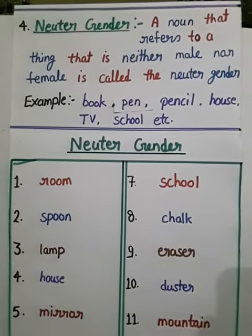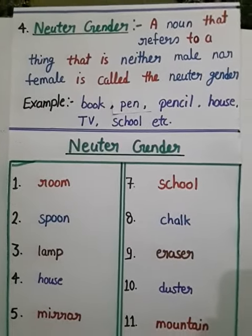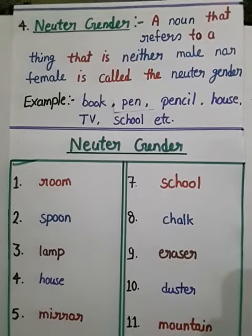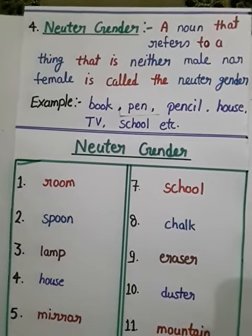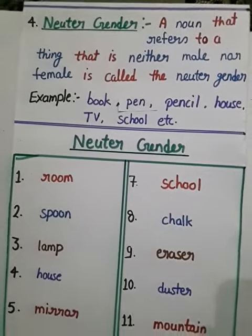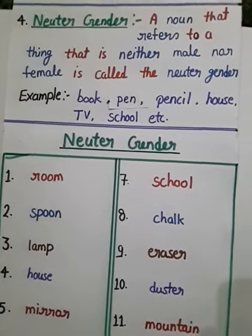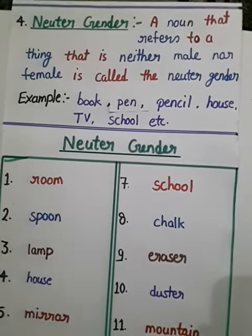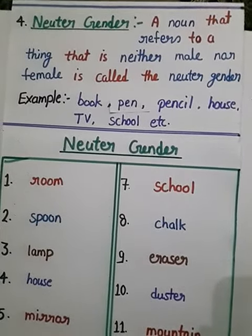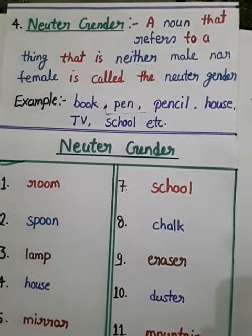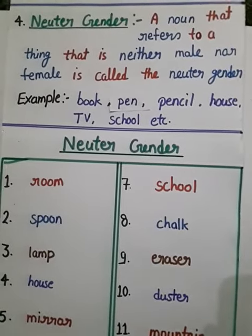Hello students, I am once again Anuj Kumar, your English teacher. As I have taught you, common gender is a noun that refers to a thing that is both male and female — you cannot identify whether it is male or female. That is common gender. In neuter gender, a noun refers to a thing that is neither male nor female. This is the main difference between common gender and neuter gender.